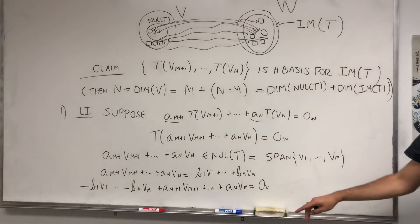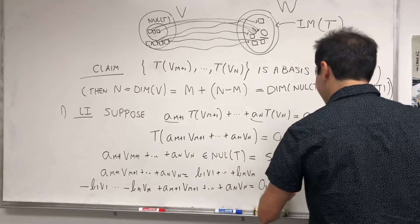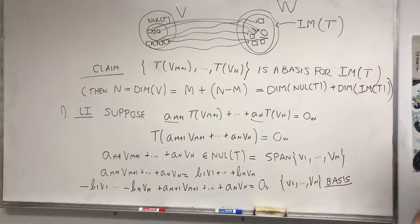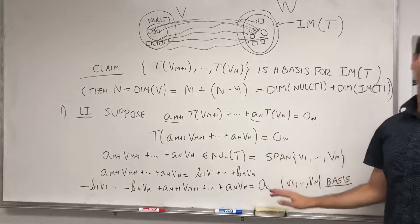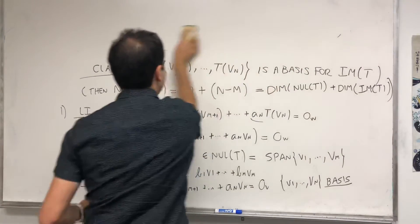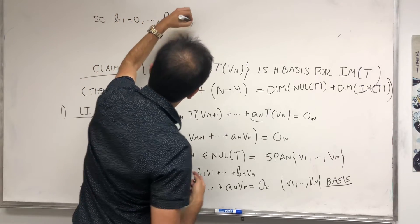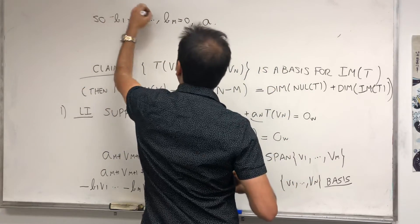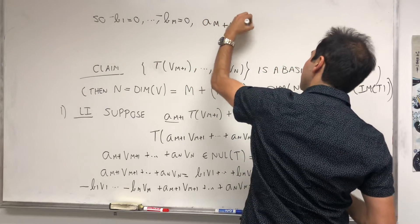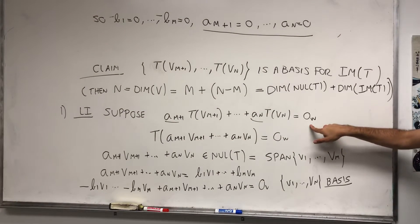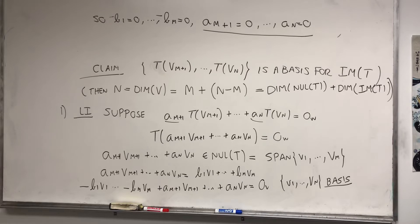But look, we know that the whole set is a basis. Remember, because we extended it to be a basis. In particular, this set is linearly independent, which means that all those coefficients are zero. So B1 equals zero, ..., Bm equals zero, Am+1 equals zero, ..., An equals zero. And you see, that's precisely what we want. We suppose some linear combination gave you the zero vector, and we showed that the only combination is the trivial combination. So this shows it's linearly independent.